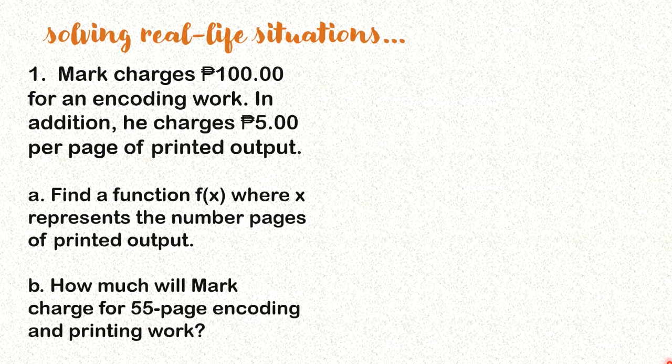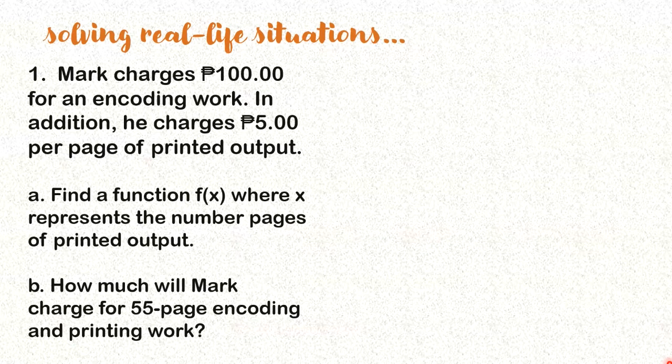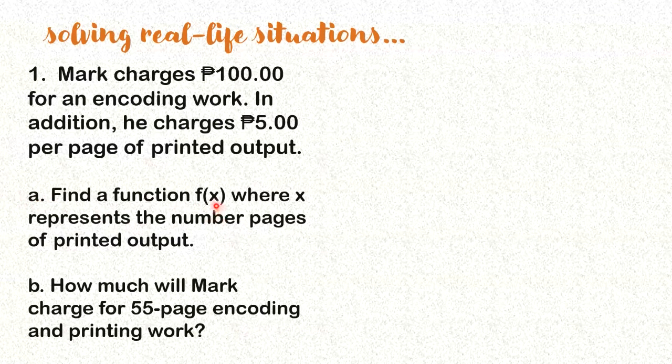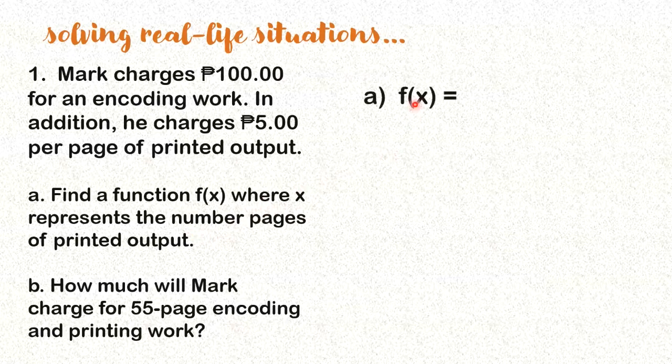Let's solve this first problem. Mark charges 100 pesos for an encoding work. In addition, he charges 5 pesos per page of printed output. So for typing job only, fixed is 100 pesos. And if you need printing, additional 5 pesos per page. Here, we're going to find f(x), which is the total charges or total fees that need to be paid for encoding and printing, where x represents the number of pages of printed output.